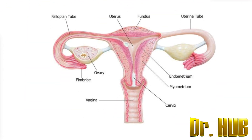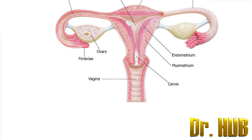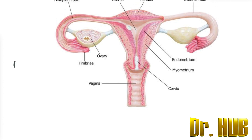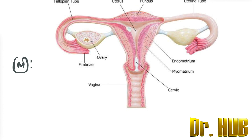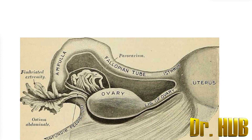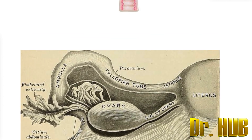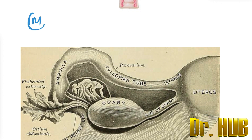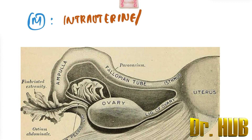The intramural portion is intrauterine, and it is the narrowest and shortest part of the fallopian tube.